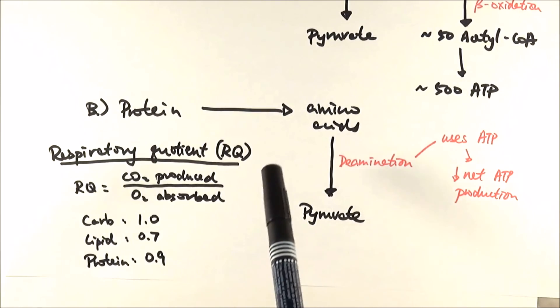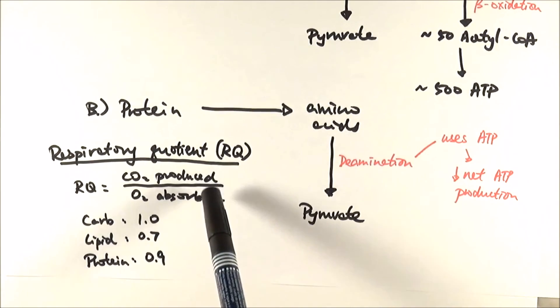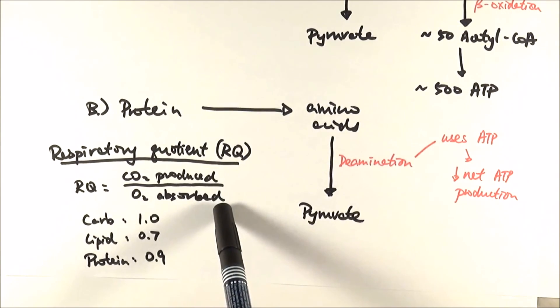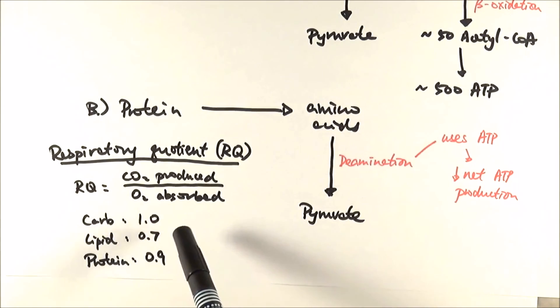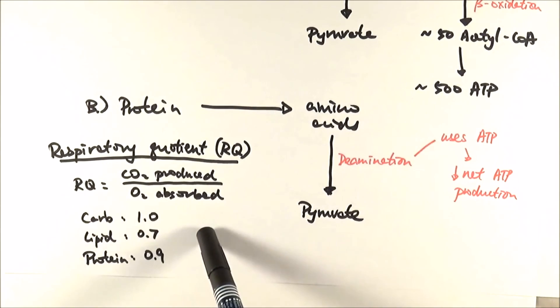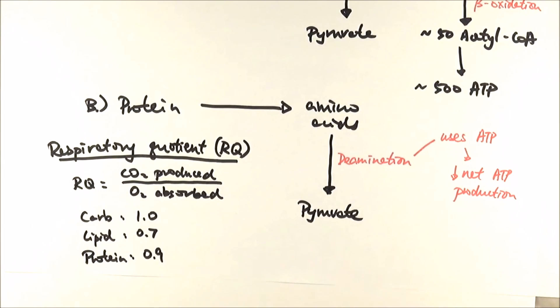What you need to know for exams is they may give you an experimental setup with values for the number of carbon dioxide produced and oxygen used up, ask you to calculate the RQ value from the data given, and then use that RQ value to suggest which respiratory substrate was being used in that particular experiment or by that particular organism.